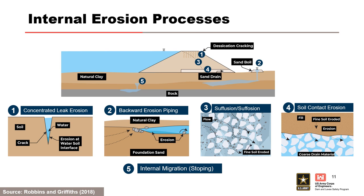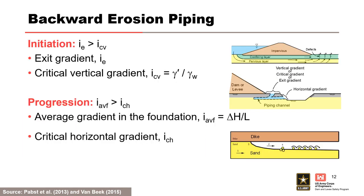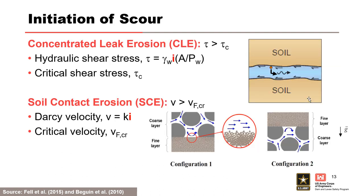Direct use of critical velocities or gradients determined from laboratory experiments is limited by the narrow range of materials tested and an apparent significant scale effect. For backward erosion piping, initiation is governed by Terzaghi's classical equation for critical vertical gradient, whereas the average gradient informs the hydraulic condition for progression. For scour, you cannot just discuss hydraulic gradient. For concentrated leak erosion, hydraulic shear stress is a function of hydraulic gradient as well as pipe or crack geometry, and the critical shear stress is dependent on erodibility. For soil contact erosion, the Darcy velocity is a function of hydraulic gradient and horizontal permeability, and the critical velocity is based on a theoretical critical value from experiments, which is a function of particle size and porosity.